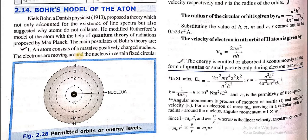So Bohr came up with new ideas about atoms, making certain changes, and he gave the following postulates. The first postulate is: an atom consists of a massive, positively charged nucleus. The electrons are moving around the nucleus in certain fixed circular orbits.